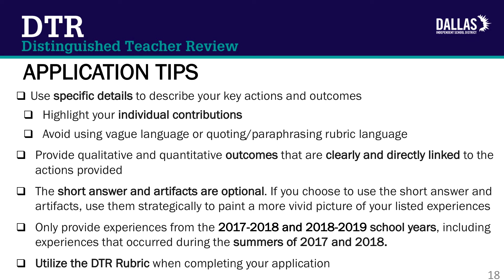Here are some tips to consider when completing the DTR application: 1. Use specific details to describe key actions and outcomes. 2. Highlight individual contributions and avoid using vague language or quoting or paraphrasing rubric language. Provide qualitative and quantitative outcomes that are clearly and directly linked to the actions provided. 3. The short answer and artifacts are optional. If a teacher chooses to use the short answer and artifacts, they should use them strategically to paint a more vivid picture of the provided experiences. 4. Only provide experiences from the 2017-2018 and 2018-2019 school years, including experiences that occurred during the summers of 2017 and 2018. 5. Utilize the DTR rubric when completing the application.